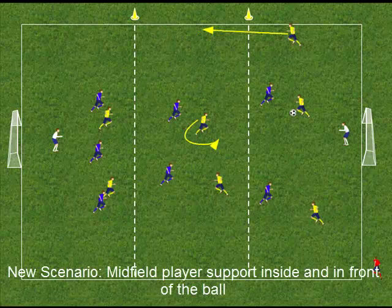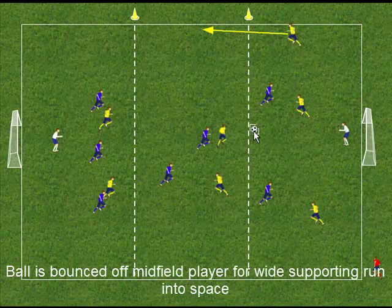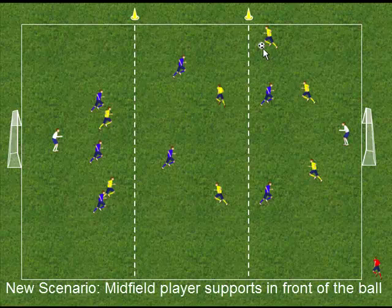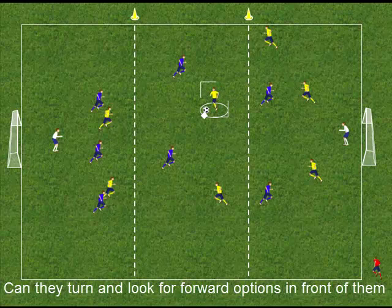Here the midfield player shows for the ball, draws the defender towards him and creates space wide for a supporting run from a defender. Again, all the players move to support the ball as it travels. Here the midfield player finds some space to receive the ball and face the opposition goal. In this scenario, the player will need support in front of them so they can pass the ball forward positively or drive into the space created.